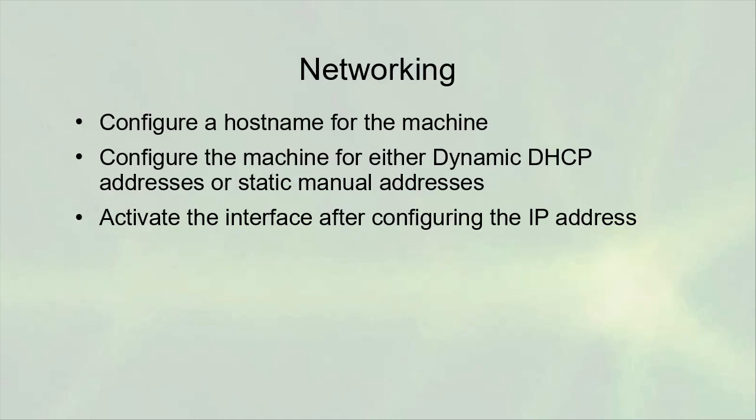When you're in Anaconda, you have to configure networking. Make sure you configure a hostname for the machine — every machine should have its own hostname, don't stay with localhost. You want to make sure the machine has either DHCP or static manual addresses configured. If you use DHCP, you need a DHCP server in the network it will reside in. If you are not using DHCP, you need to configure all the important parts of a static address: an IP address, a subnet mask, a gateway, and a DNS server. After configuring networking, make sure you activate the interface so it will come up on startup.